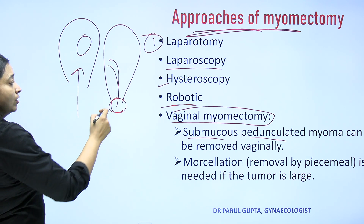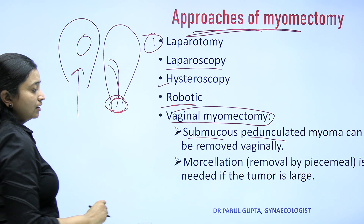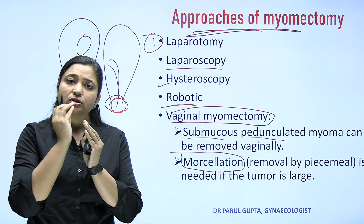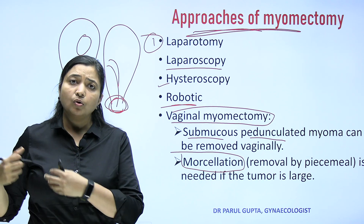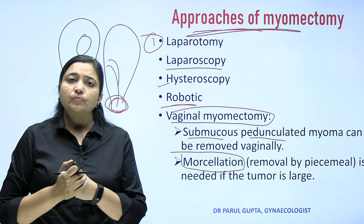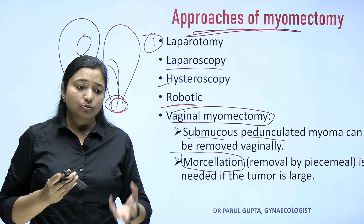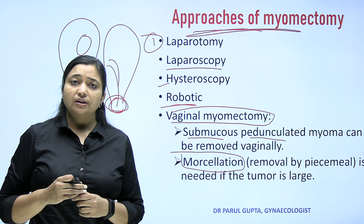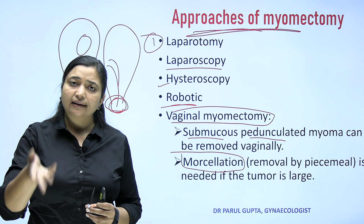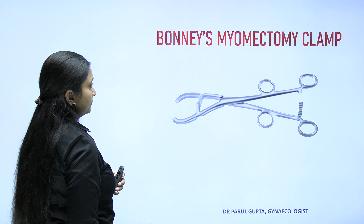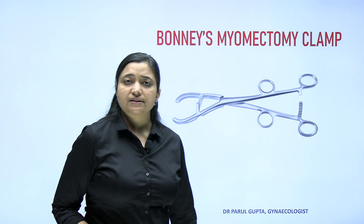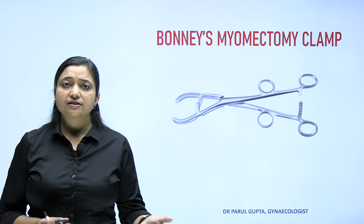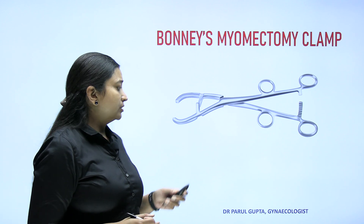If a pedunculated submucous myoma is visible, you can twist it off and perform a polypectomy, or if it is large you can perform morcellation. Morcellation means cutting a tumor into very small pieces and removing them piece by piece, rather than as a whole. In laparoscopic myomectomy, after removing the fibroid from the uterus, a morcellator instrument is used to morcellate the specimen inside the abdomen and retrieve it through the small port incisions.